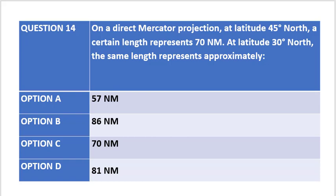The question states on a direct Mercator projection at latitude 45 degrees north a certain length represents 70 nautical miles. At latitude 30 degrees north the same length represents approximately, and the four options are as given below.